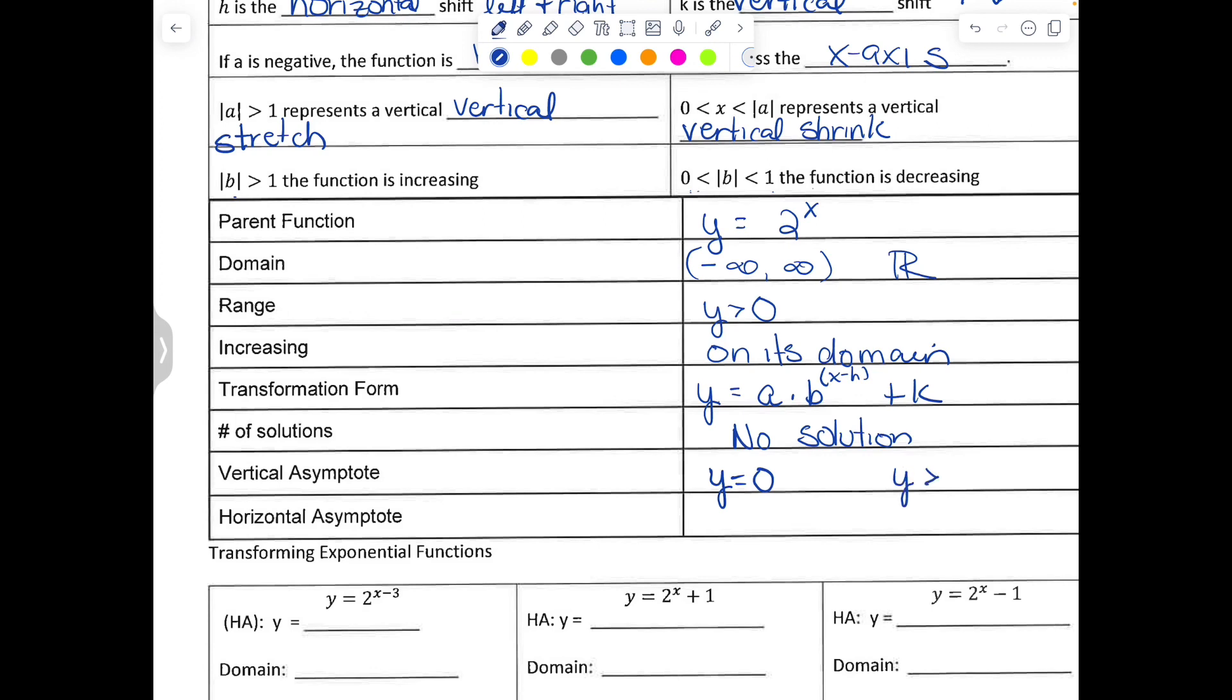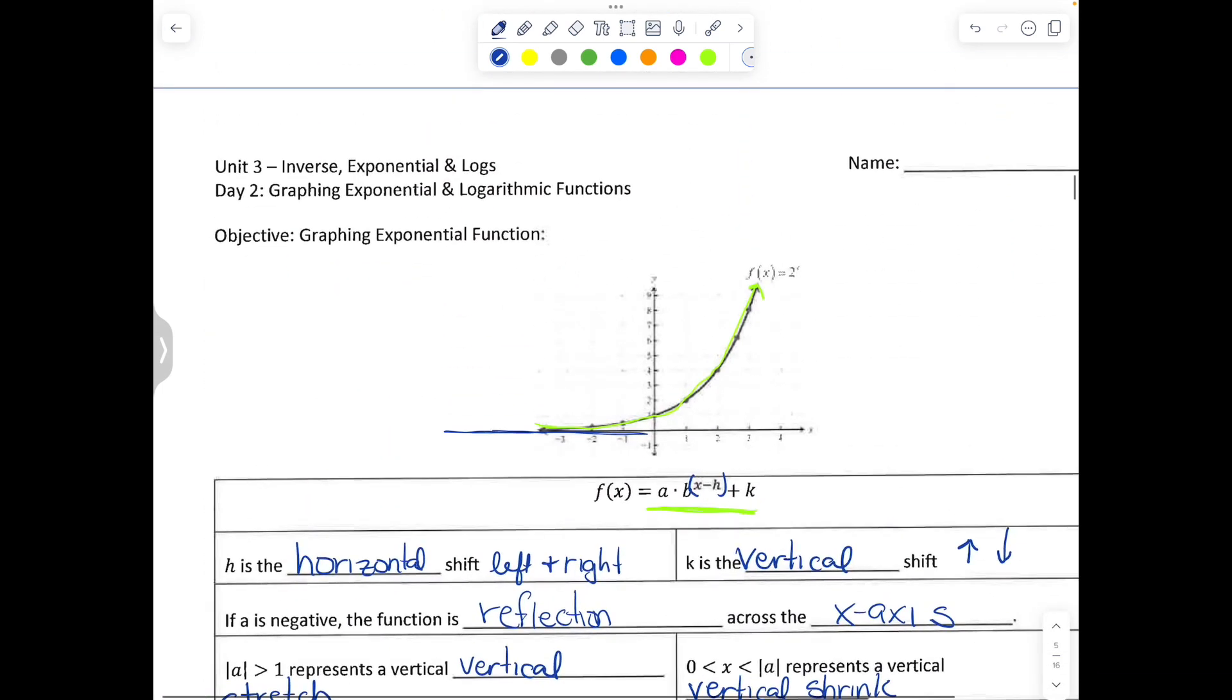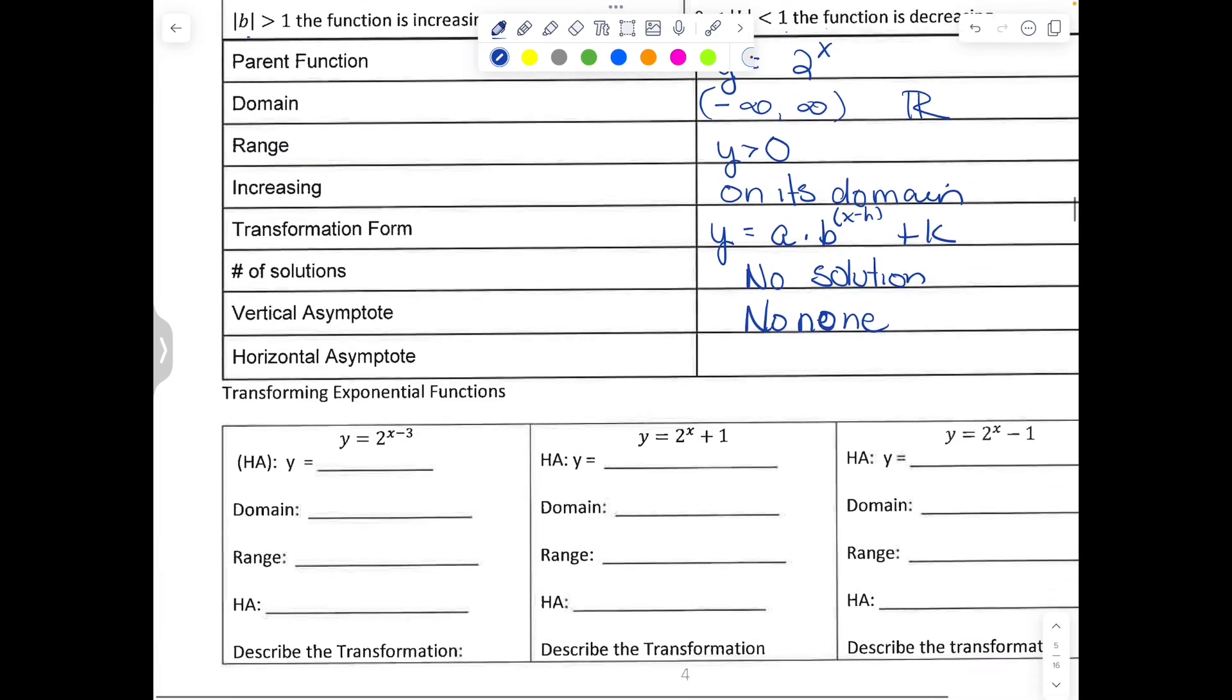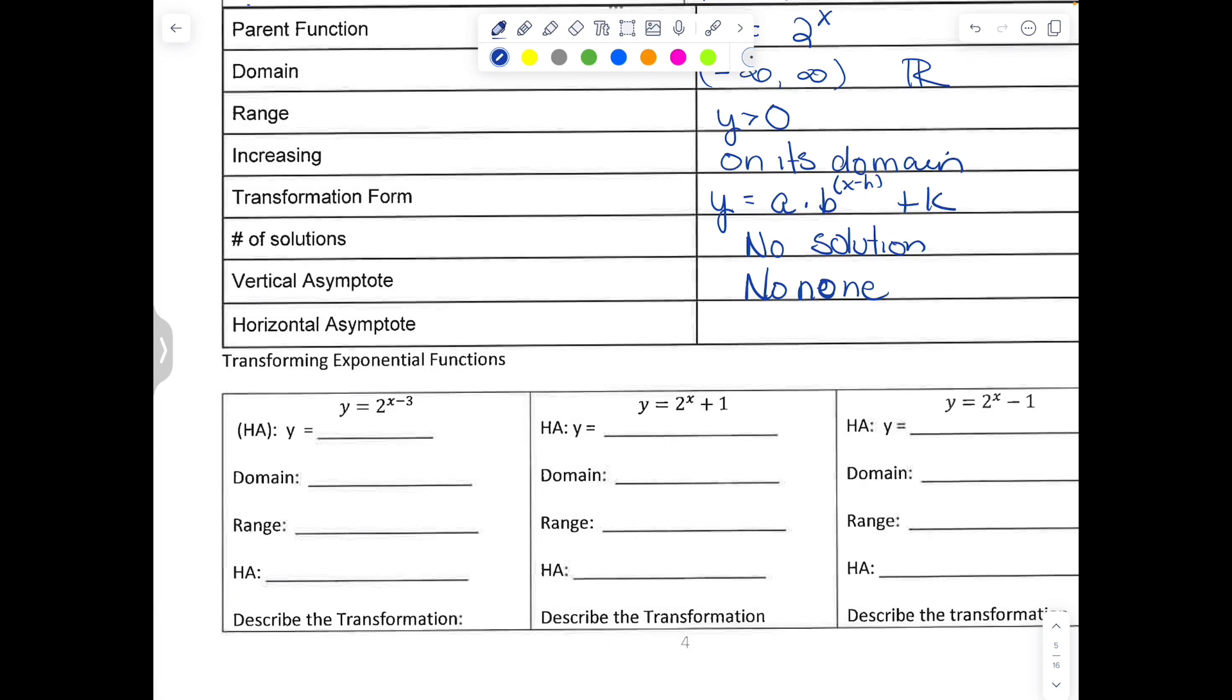The parent function will have an asymptote of y equals 0. When we're looking at it, it's going to be y is greater than k—I'm sorry, that's wrong. That's for the horizontal asymptote. If you look at the graph above, there's no vertical line that it just approaches and never touches. It keeps going on and on forever. And then for the horizontal asymptote, that's what I was saying before, y equals 0, or y is going to be greater than k.